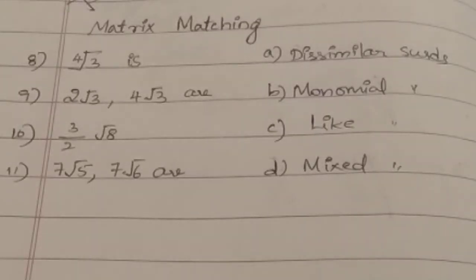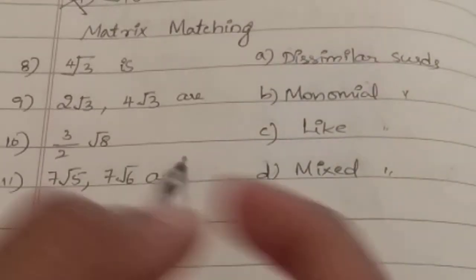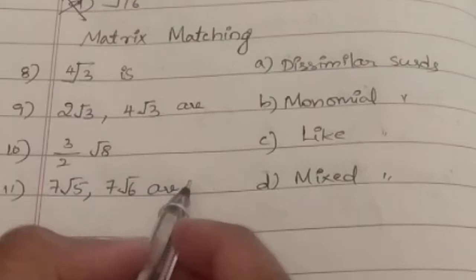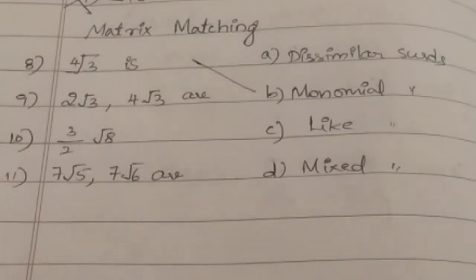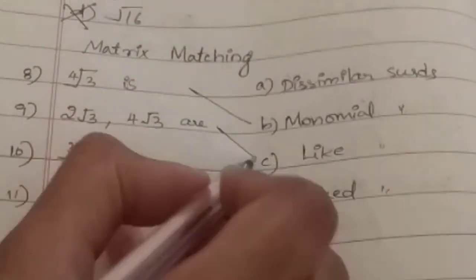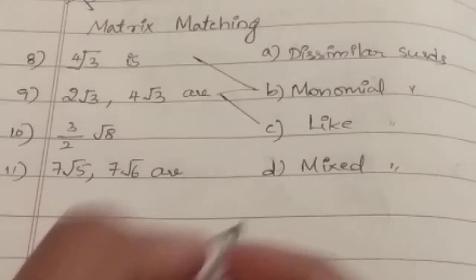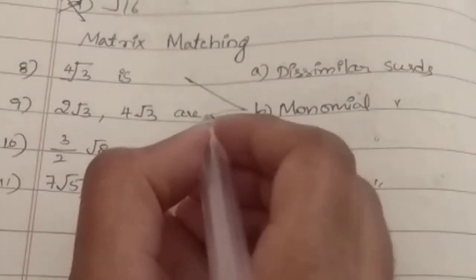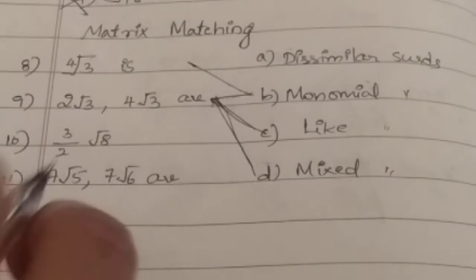Now matrix matching. In column 1, you could see questions and in column 2, you have to match it. 4th root of 3, what is it? It is a monomial surd.